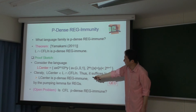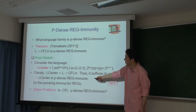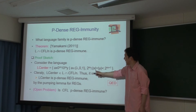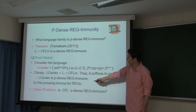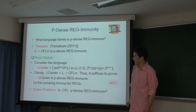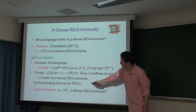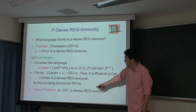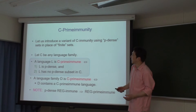P-denseなregular immuneというのは存在して、CFL/NとLのインターセクションがP-denseなregular immuneになっています。具体的な例としてL_centerというものがあります。XとYが同じ長さで真ん中に1があり、両側に0が同じ個数ある言語で、奇数ビット調整のためAという1ビットを加えます。この言語はCFL/NとLに入っていてP-denseかつregular immuneですが、アドバイスが必要です。